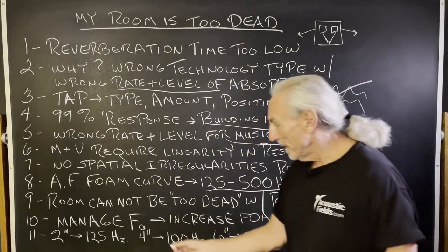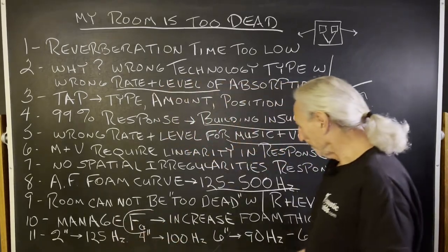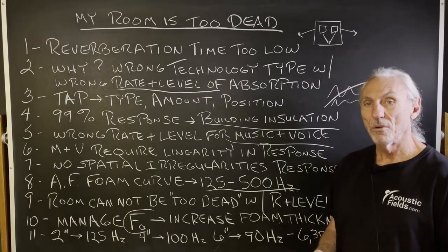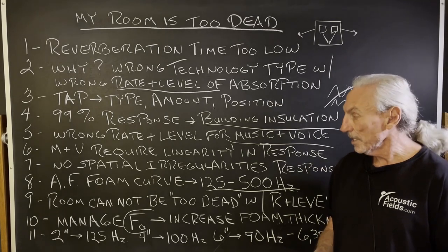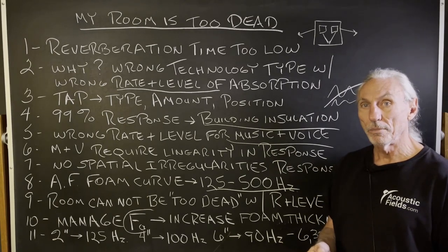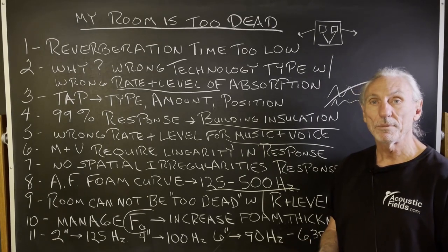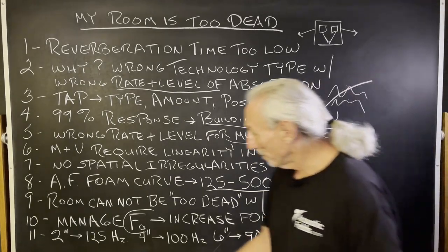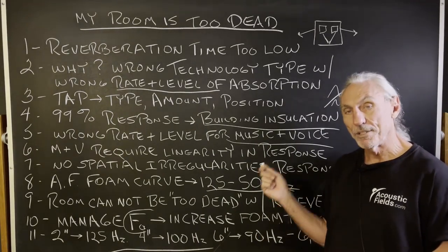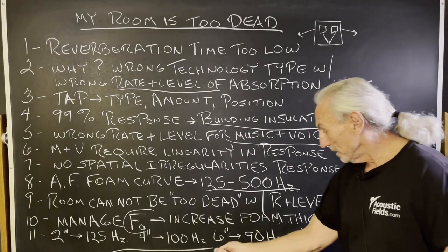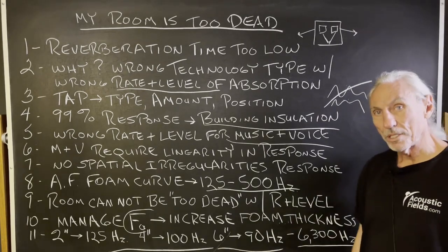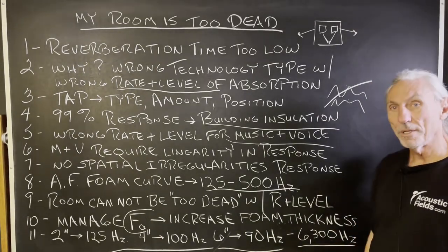So you want to manage the resonant frequency with the foam. And we can do that. See, we can increase the strength or the lower frequency that the foam starts working at. Our standard two-inch variety starts at 125. You might need to go a little bit lower depending on your room size, volume, and usage. So then you can increase the thickness. If we increase the thickness to 4 inches, we can start at 100 hertz. See, and that's the benefit of a technology that's very linear. Then we can go 6 inches. We can get down and start with 90. And then up to 6300, which is the top limit of the foam.